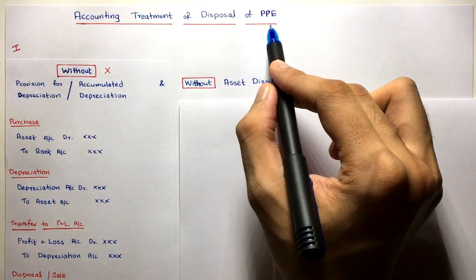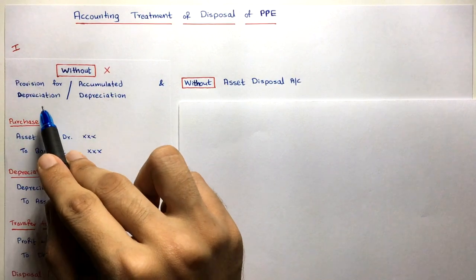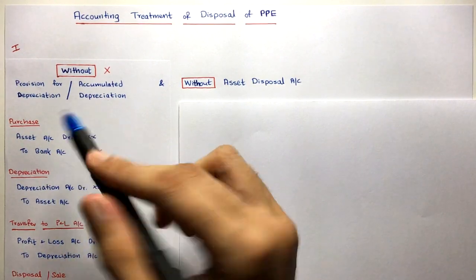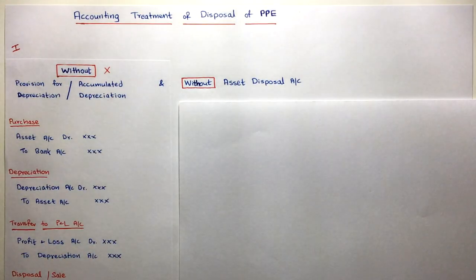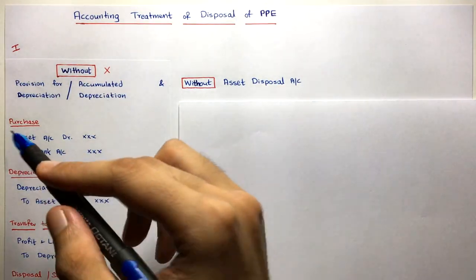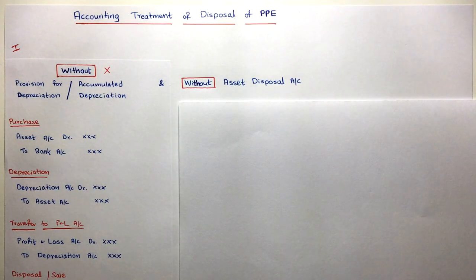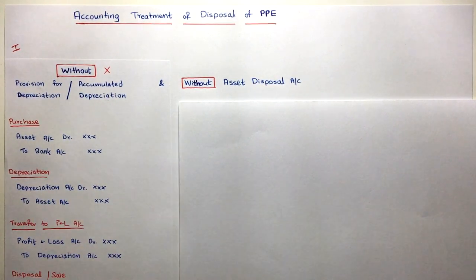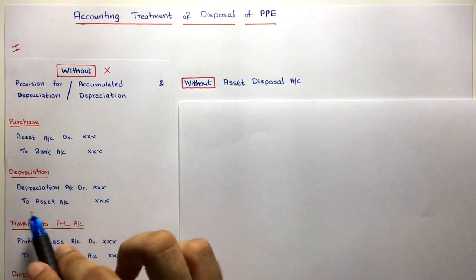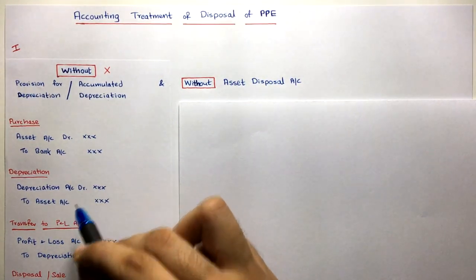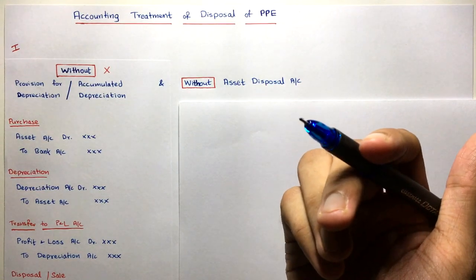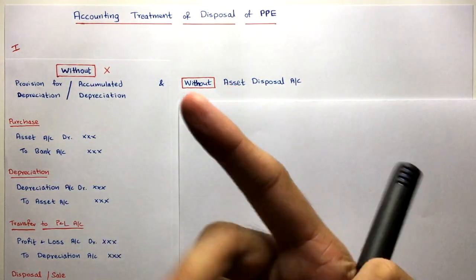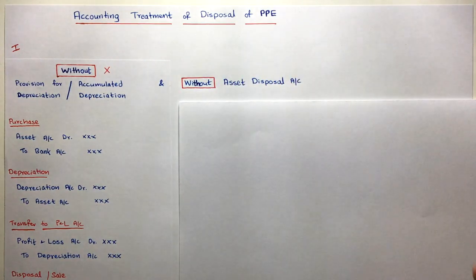Case 1: Accounting treatment of disposal of PPE when we are NOT maintaining provision for depreciation/accumulated depreciation, and also NOT maintaining an asset disposal account. The purchase entry is the same: Asset Account Dr. to Bank Account. The depreciation entry is: Depreciation Account Dr. to Asset Account — passed at year end.